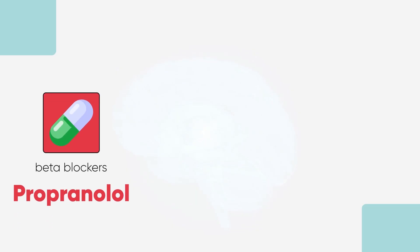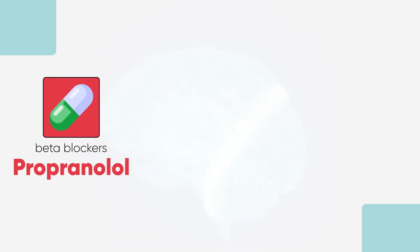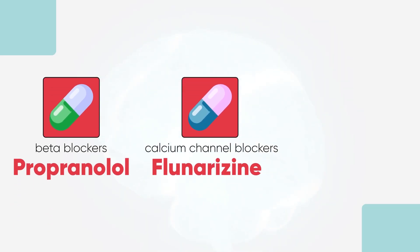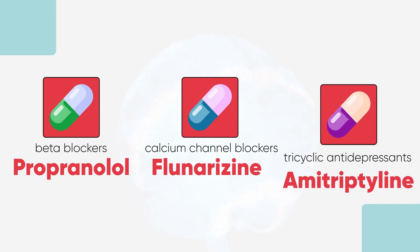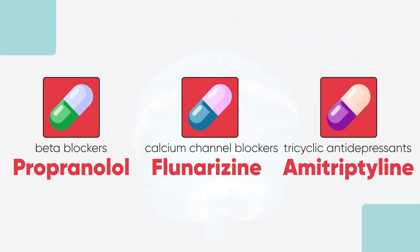Some of the common preventive migraine medicines we use are beta blockers like propranolol, calcium channel blockers like flunarazine, and tricyclic antidepressants like amitriptyline. All of these preventive medicines have very different drug profiles, and which type of drug is best suitable for which patient is something that your neurologist will decide only after seeing you personally, because all treatment has to be individualized to the patient.